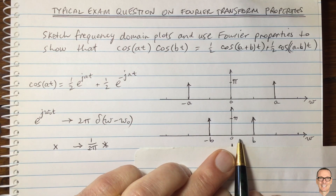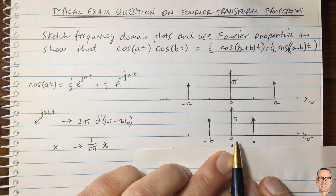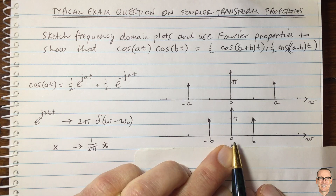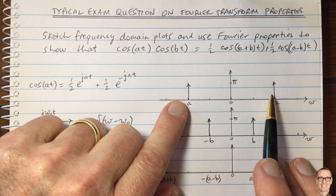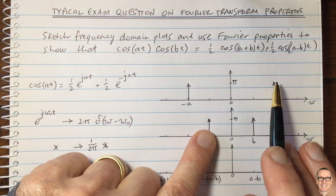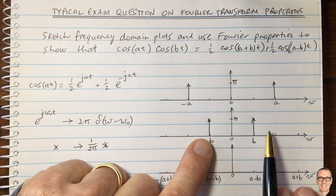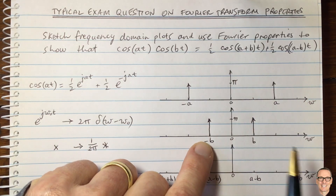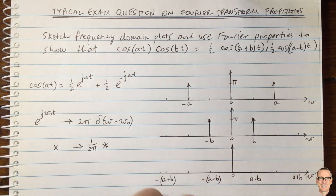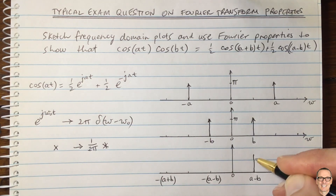When we do the convolution, we use another property: convolving a function with a delta function shifts that function so its zero is located at the position of the delta function. Because it's linear, we can convolve with each delta function separately and then add the results. Convolving this function with the delta at +b shifts the deltas up to a+b and a−b.